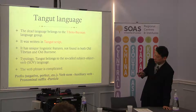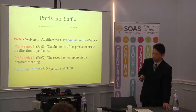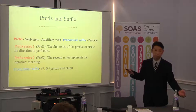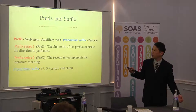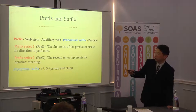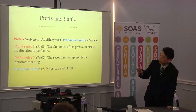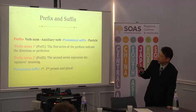After the prefixes, there is a verb stem and auxiliary verb, and a pronominal suffix, especially for pronouns, and a particle. For today's presentation, I will explain just the prefix and suffix in Tangut language. This is the main verb — the verb stem and auxiliary verb — that constitutes the verb phrase. And the prefix and pronominal suffix, in some cases, are accompanied by some particles.